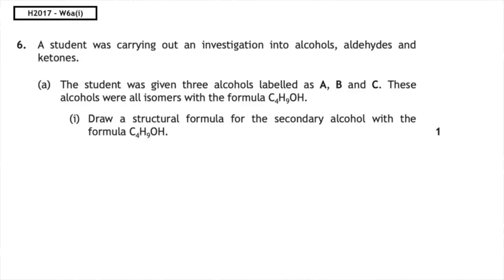This past paper questions from the higher 2017 written 6A part 1. A student was carrying out an investigation into alcohols, aldehydes and ketones. The student was given three alcohols labelled A, B and C. These alcohols were all isomers with the formula C4H9OH. Draw the structural formula for the secondary alcohol with the formula C4H9OH.